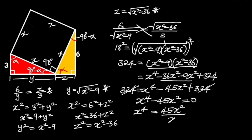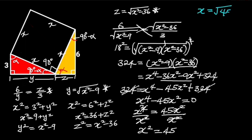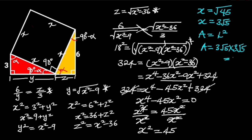Dividing through by x squared leaves us with x squared equals 45. Taking the square root of both sides, x equals 3 root 5. Now we know the value of x, which is the length of the square. The area of a square equals the square of its length. Substituting the length with 3 root 5 gives us: area equals 3 root 5 times 3 root 5, which equals 45. Hence, the area of the square is 45 square units.